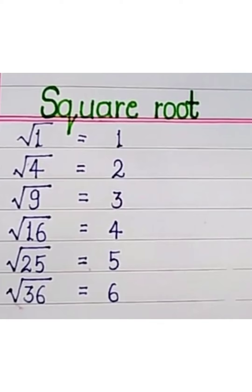1 square root is 1, 2 square root is 4, 3 square root is 9, 4 square root is 16, 5 square root is 25, 6 square root is 36.